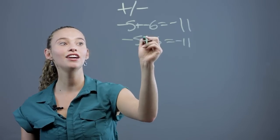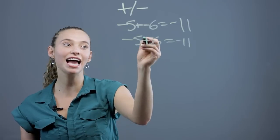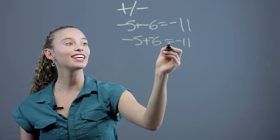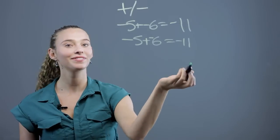Whenever you see a subtraction sign, you can always say that's the same thing as adding a negative number. So negative 5 plus negative 6 equals negative 11, the same thing.